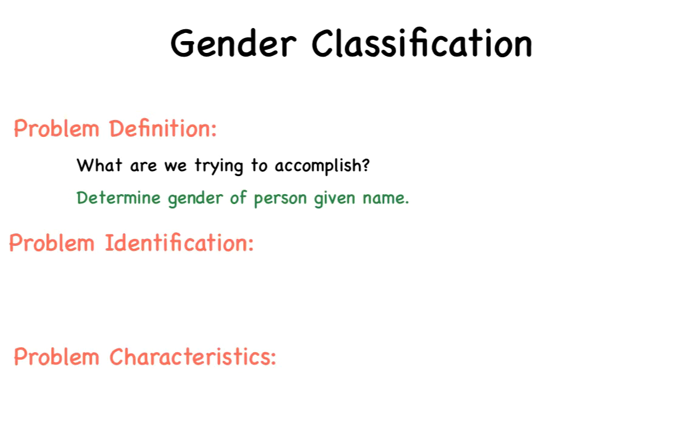Problem identification, or what type of problem are we dealing with? Since we have two predefined groups, male and female, that all samples need to be labeled, we are dealing with a classification problem. This classification problem can be solved with supervised learning. So we need to train a classification model against a set of sample names labeled male or female.